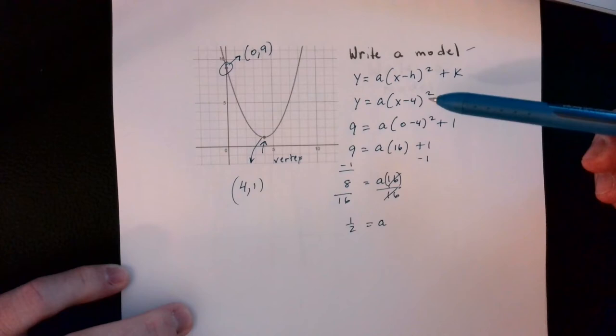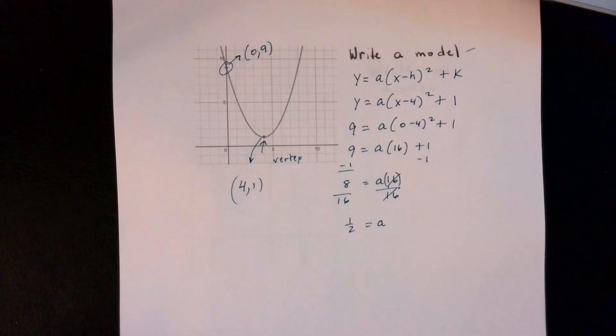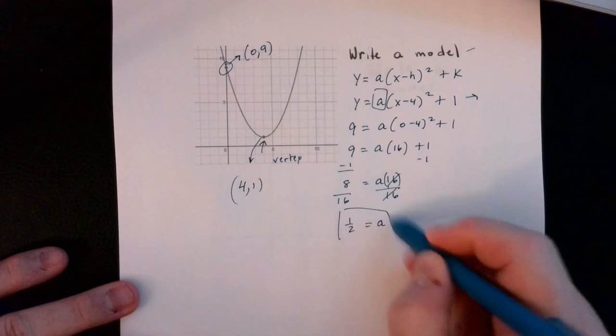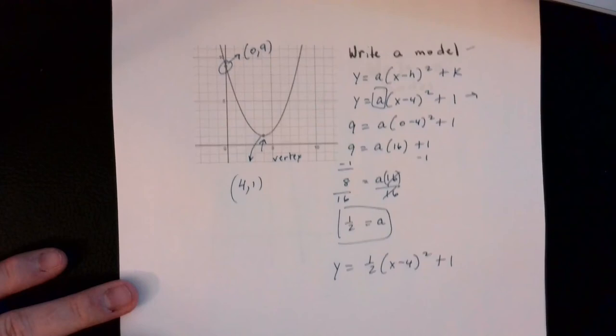You could also be asked to look at someone's work and find their mistake — we just go through the steps and compare. Writing the final model, we substitute a equals one-half back in: y equals one-half times (x minus 4) squared plus 1.